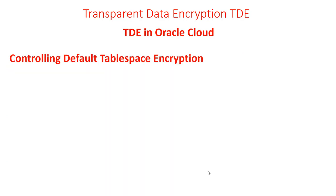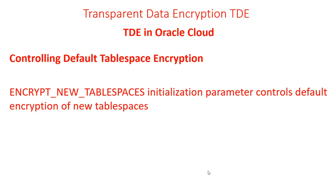Controlling default tablespace encryption: what basically controls whether tablespace encryption is applied is a parameter called encrypt_new_tablespaces. This parameter controls the nature of new tablespaces created, and there are three options for it.